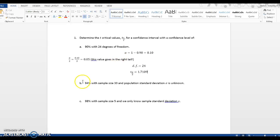Let's look at part B. We want to get a 94% confidence interval and we have a sample size 33. Population standard deviation is unknown.